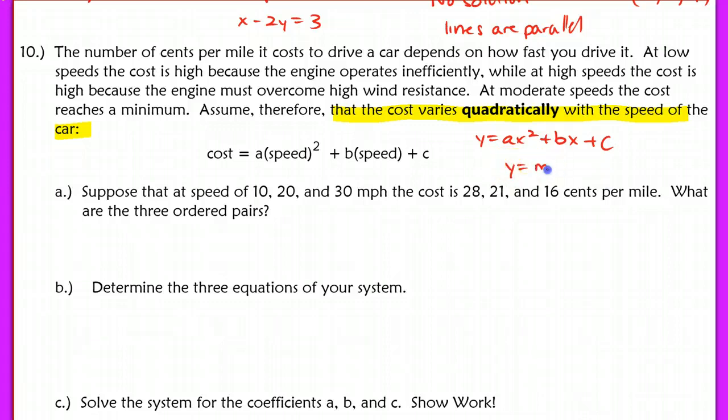This would be a linear equation, mx plus b. This is y equals ax squared plus bx plus c. This is a quadratic equation. So our graph of this would actually be a parabola. They tell us and they relate the variables for us. They say that cost is equal to a, a constant, times your speed squared, plus b, a constant, times your speed, plus c, another constant.